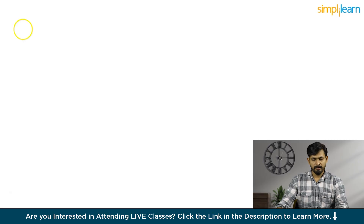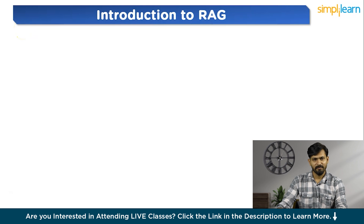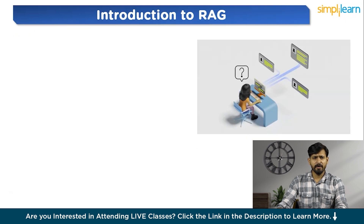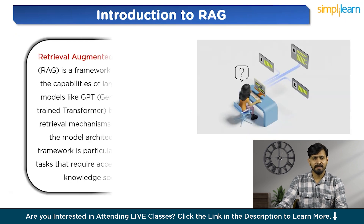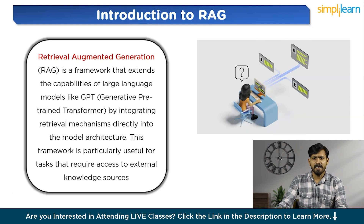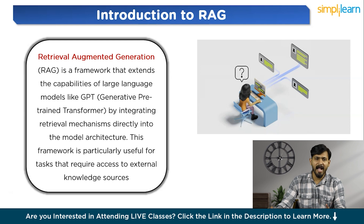Let's start with an introduction to Retrieval Augmented Generation. RAG is a framework that extends the capabilities of large language models like GPT — generative pre-trained transformer — by integrating retrieval mechanisms directly into the model architecture. This framework is particularly useful for tasks that require access to external knowledge sources.